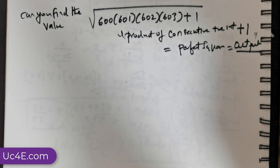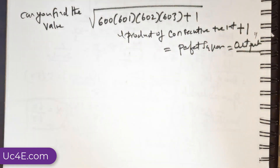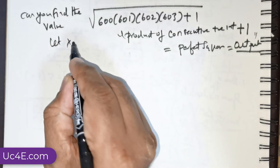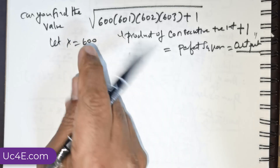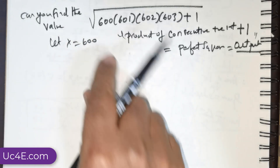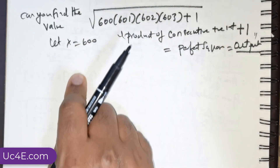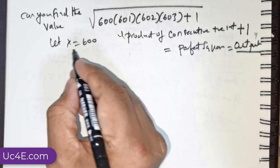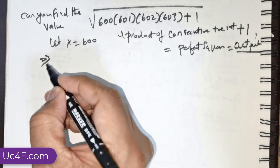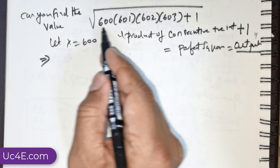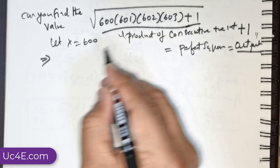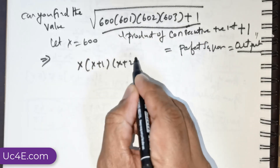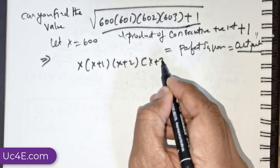Having mentioned that, let us proceed. We have 600 as our starting number, so let x = 600. I'm not going to apply the square root function just yet. With x = 600, I can rewrite the entire expression as x(x+1)(x+2)(x+3) + 1.